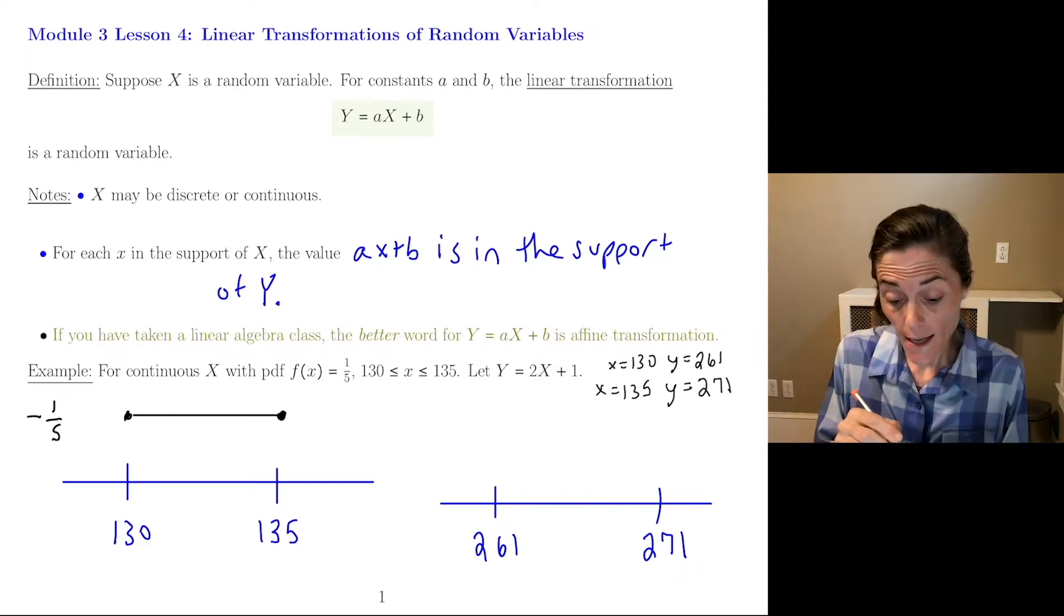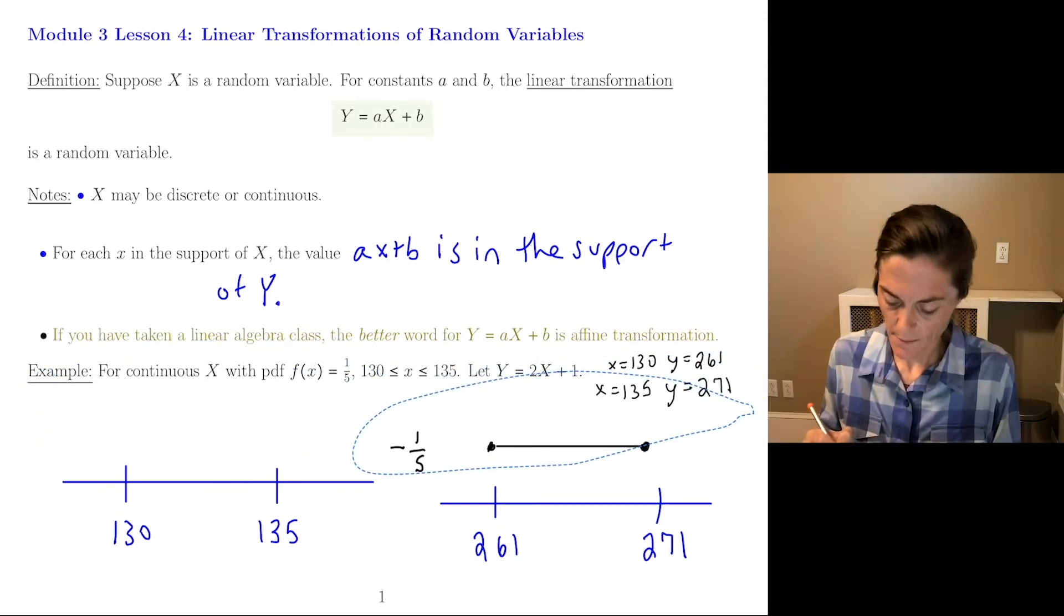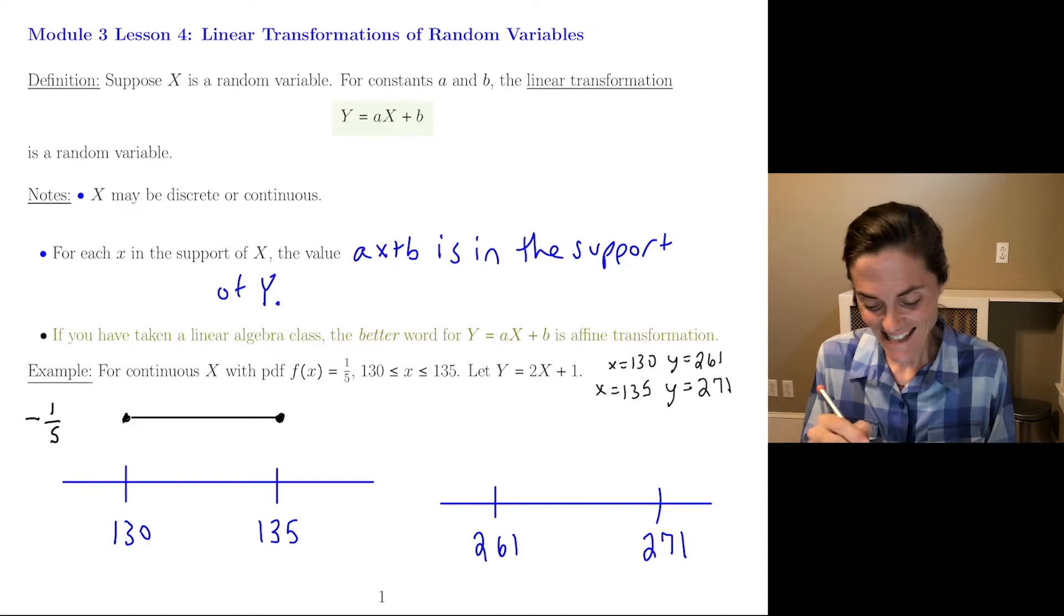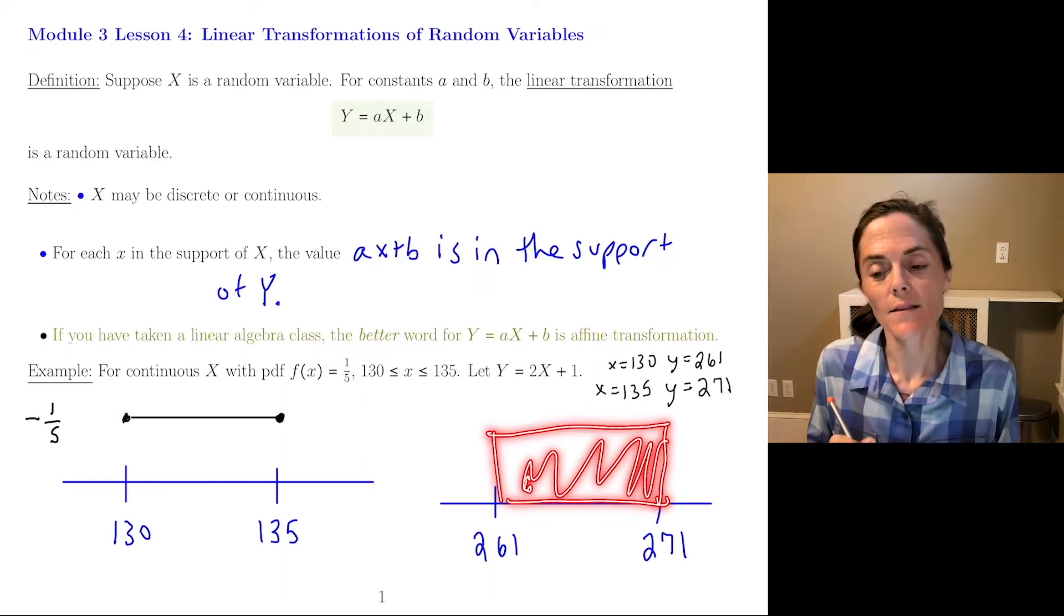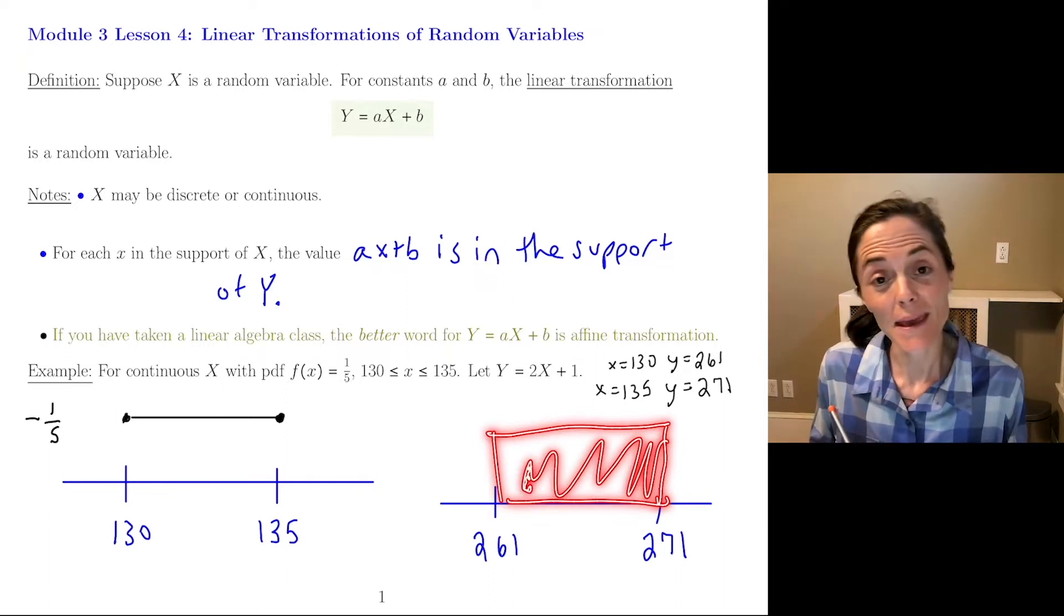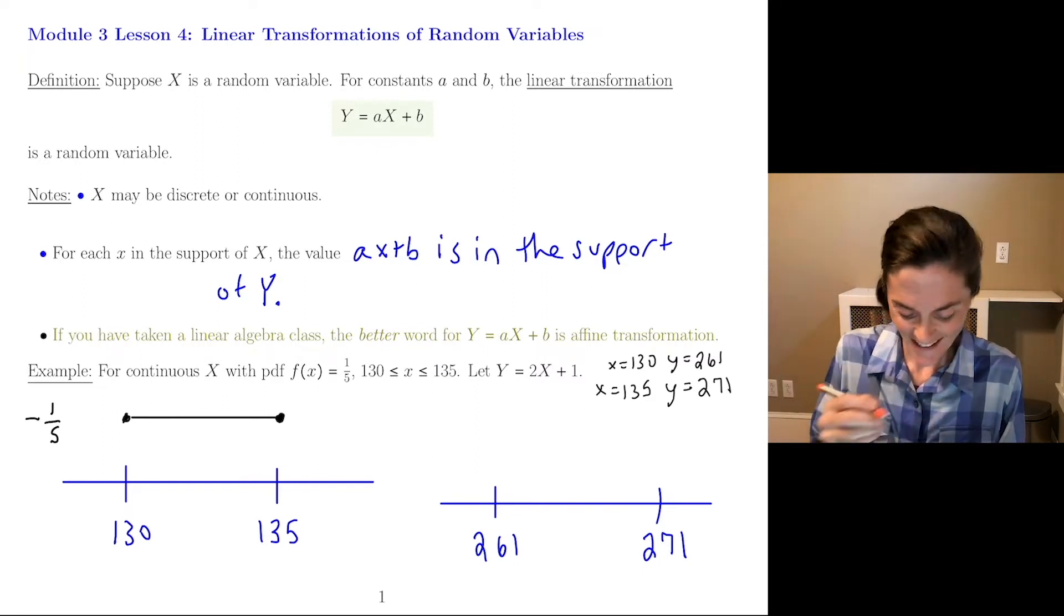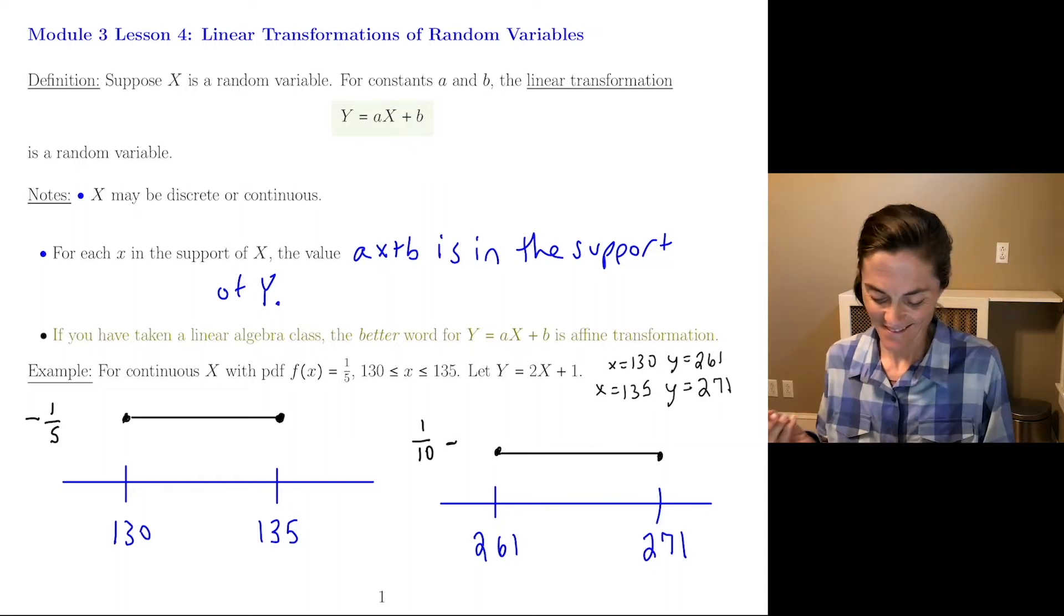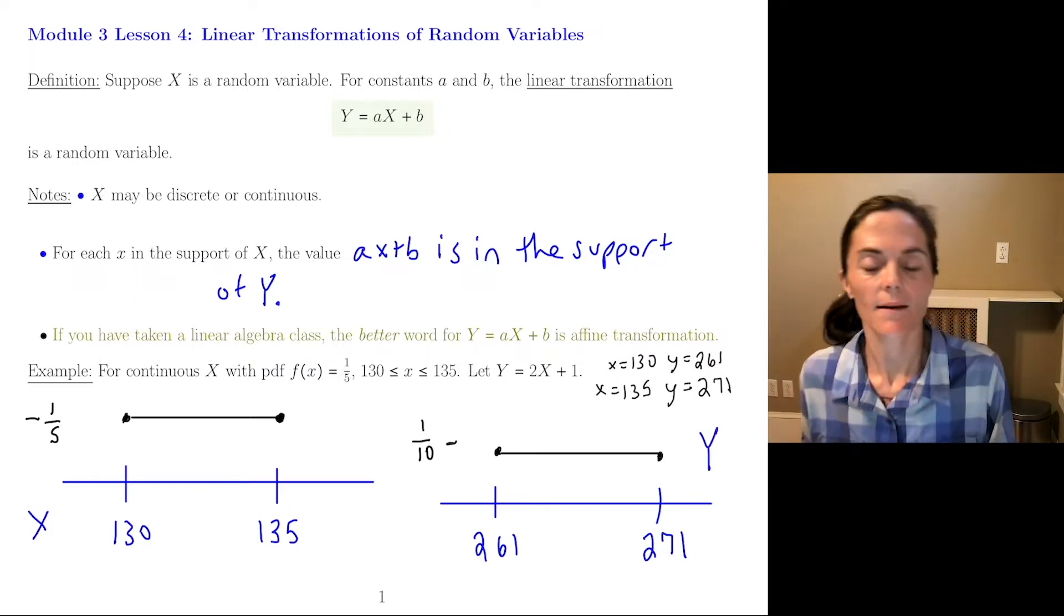Now, we cannot just do this and put this here and maybe stretch it to be covering the whole interval. We cannot do that. The reason is, if you did that, say you have height 1 5th, what's the total area here? Well, it's 1 5th times 10. It's 2. That would not be a probability density function. The probability density function has to change so that you still have area 1. So what will happen over here, this will be height 1 over 10.